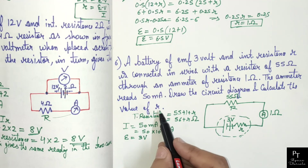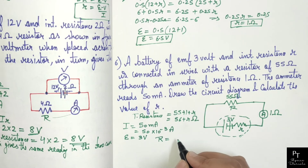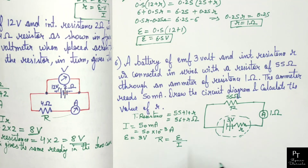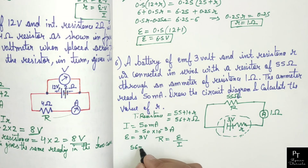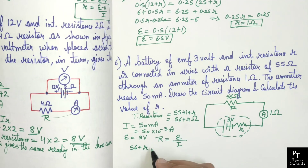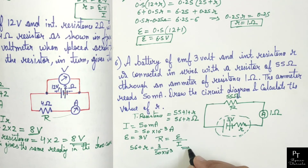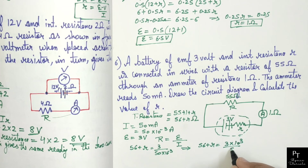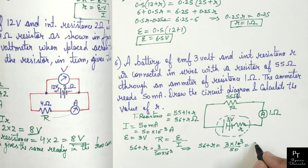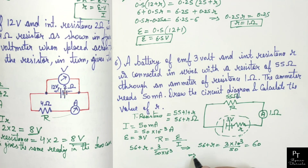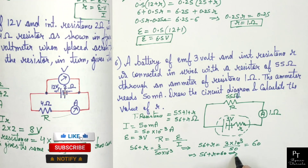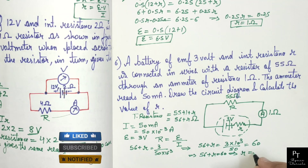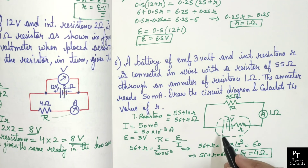Total resistance equals EMF upon current. Substituting values: 56 plus r equals 3 volts divided by 50 × 10⁻³. Simplifying the right side gives 60. So 56 plus r equals 60, therefore r equals 4 ohms. So this is the internal resistance of the battery.